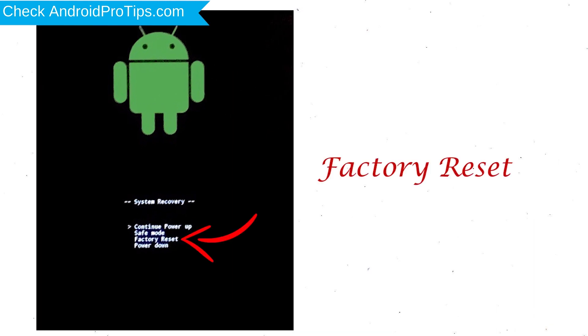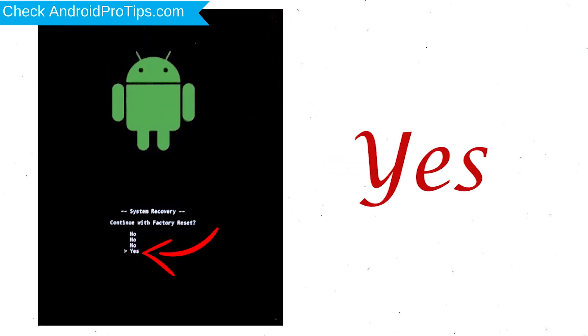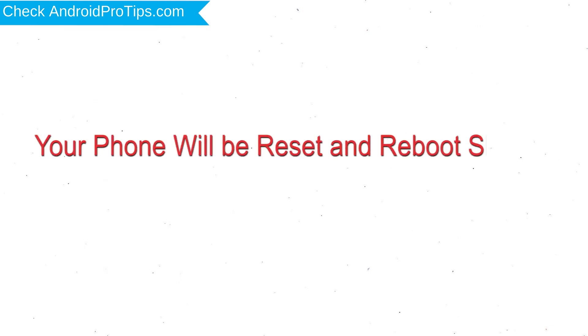Select Factory Reset using the Volume Buttons and confirm with the Power Button. Finally, choose the Yes option. Your phone will be reset and reboot shortly.